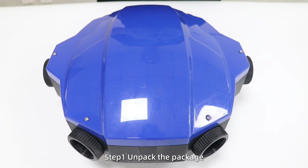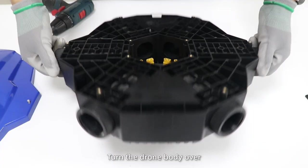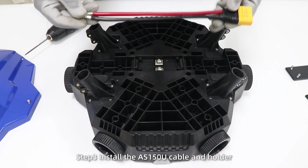Install the drone frame. Step 1: Unpack the package. Step 2: Remove the cover and control board, turn the drone body over, then remove the distribution board cover.